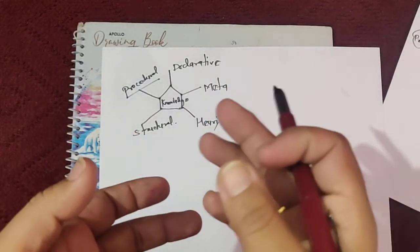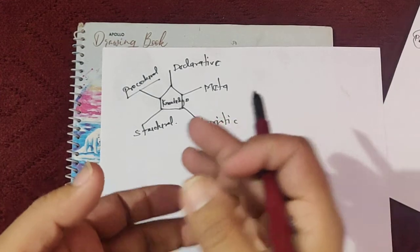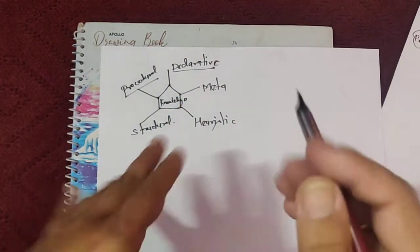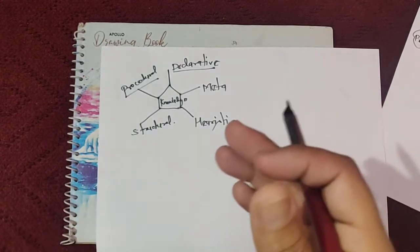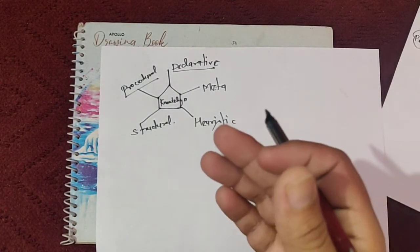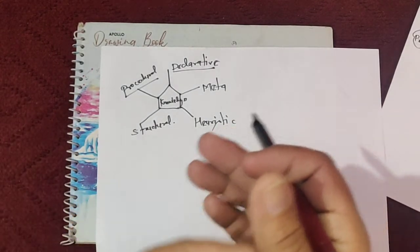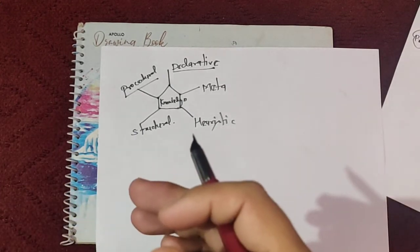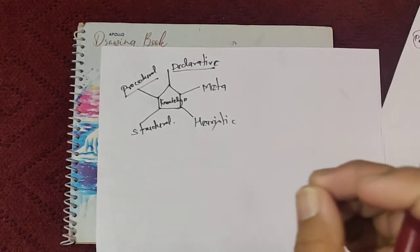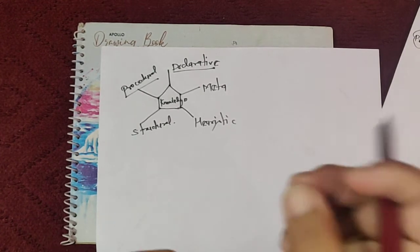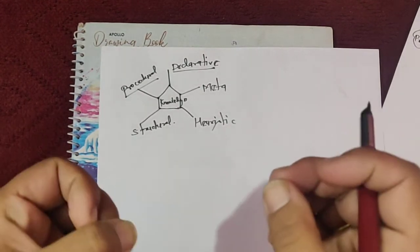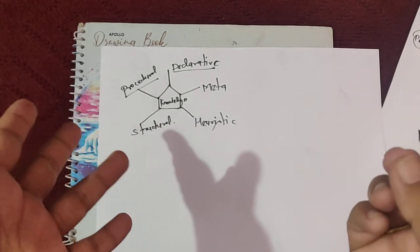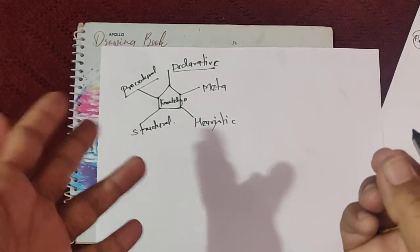Declarative knowledge describes objects instead of processes and describes what a situation is about. It doesn't discuss steps but focuses on the object and situation. For example: 'It is windy today' — that is declarative knowledge.